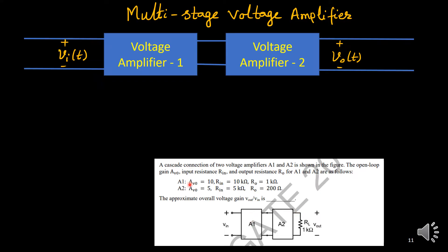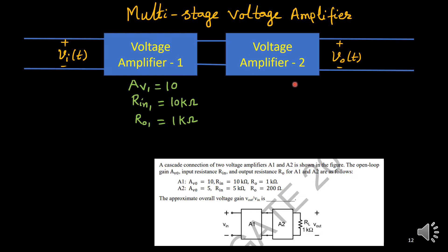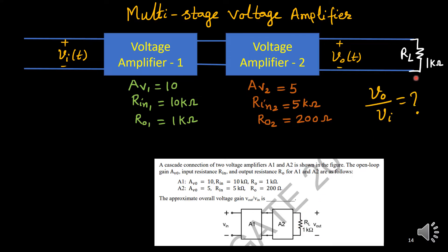Now considering this problem, the specifications given are: for A1, the voltage gain Av1 is 10, input resistance RIN1 is 10 kΩ, and output resistance R01 is 1 kΩ. For voltage amplifier A2, the gain is 5, input impedance is 5 kΩ, and output resistance is 200 Ω. One load RL of 1 kΩ is also connected. We need to find V0 upon VI, the overall voltage gain.